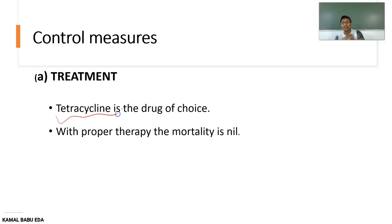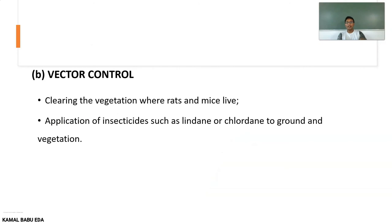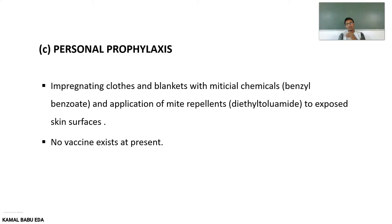With proper treatment we can reduce the mortality rate to zero percent. For vector control, we mainly have to clear the vegetation where rats and mice are living, and apply insecticides such as lindane or chlordane to the ground and vegetation.